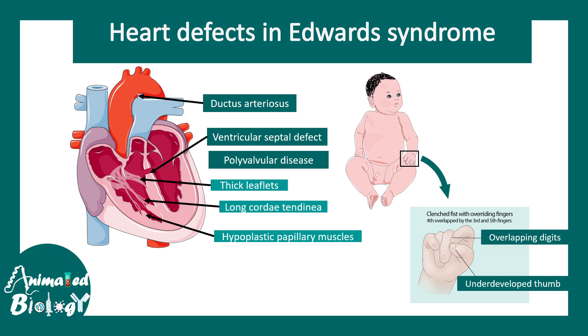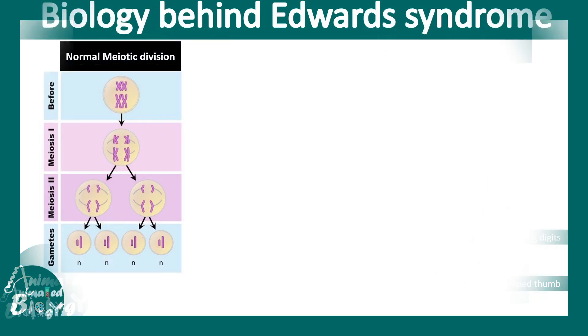Another distinct feature of Edward syndrome children is they have overlapping digits and an underdeveloped thumb. These are hallmark signs of Edward syndrome.